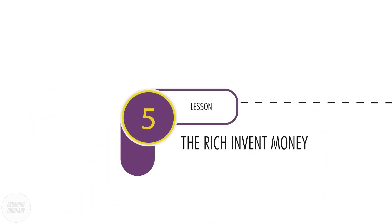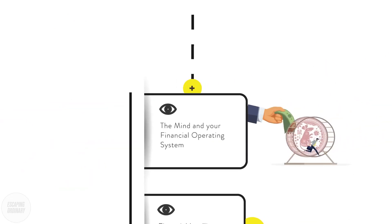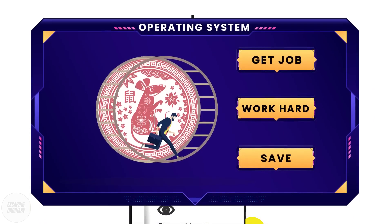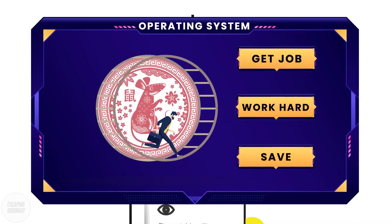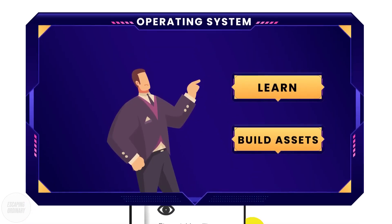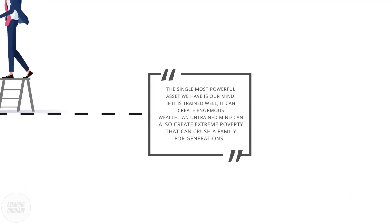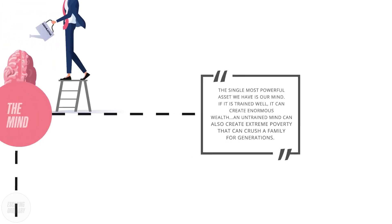Lesson 5: The rich invent money. Most people's operating system for creating money is: get a good job, work hard, and save your way to financial freedom. The rich don't trade their time for an hourly salary — they find ways to build assets. To build your asset base, you need financial intelligence. The single most powerful asset we have is our mind. If it is trained well, it can create enormous wealth. An untrained mind can also create extreme poverty that can crush your family for generations.